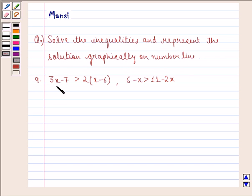Solve the inequalities and represent the solution graphically on number line. The ninth question is: 3x minus 7 is strictly greater than twice of x minus 6 and 6 minus x is strictly greater than 11 minus 2x.